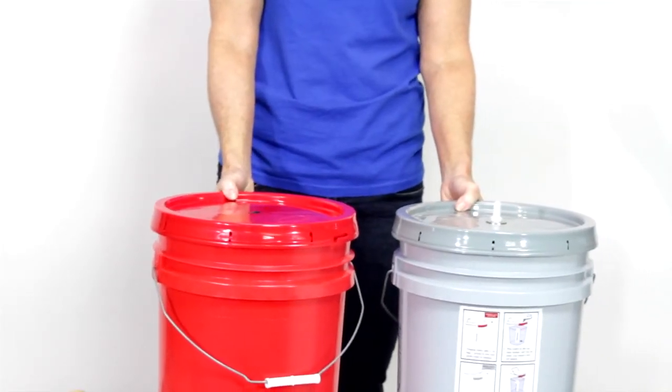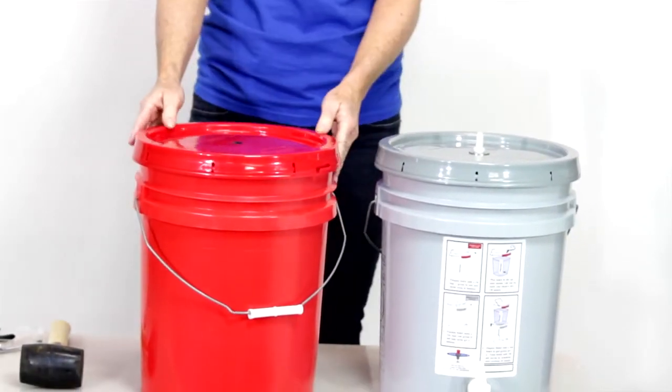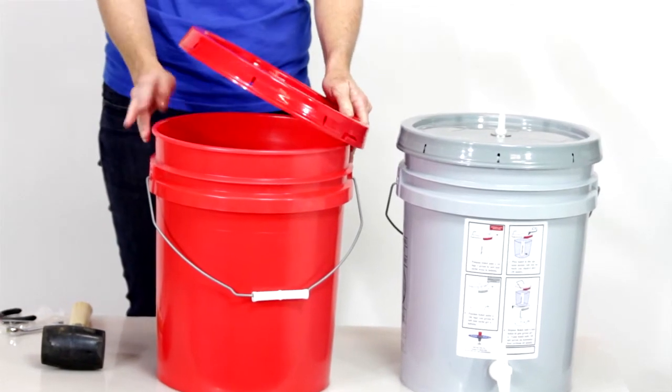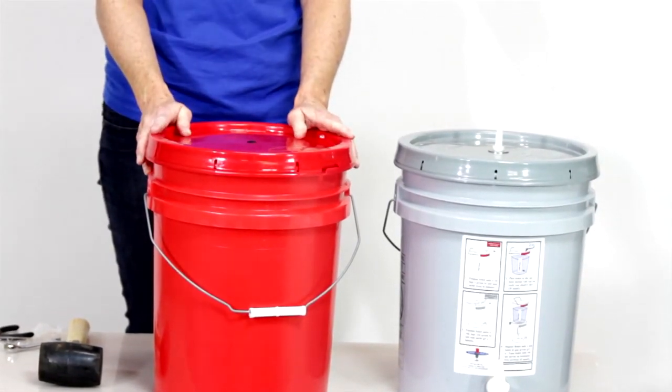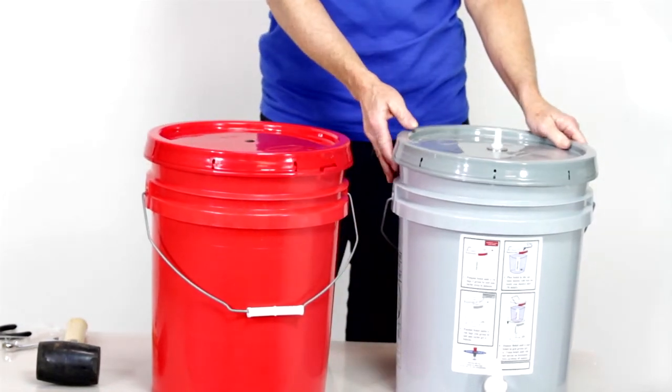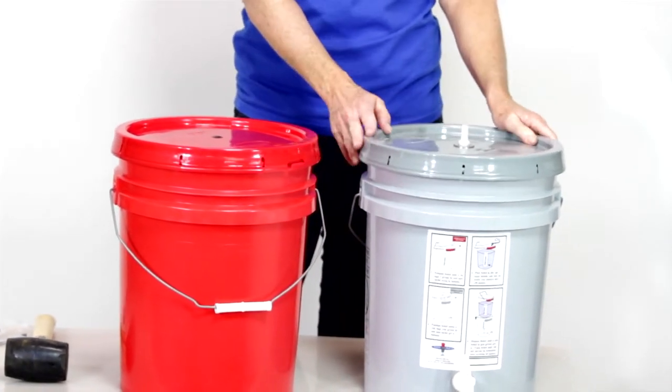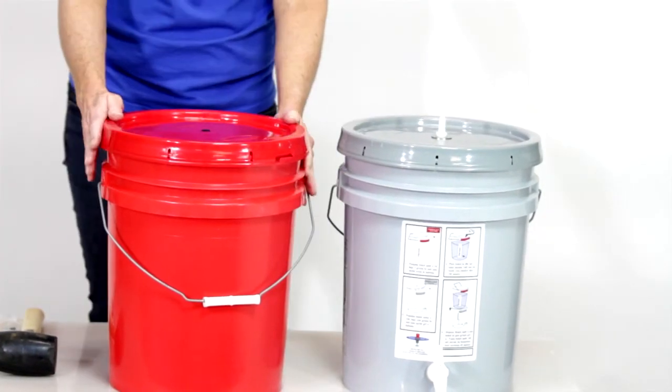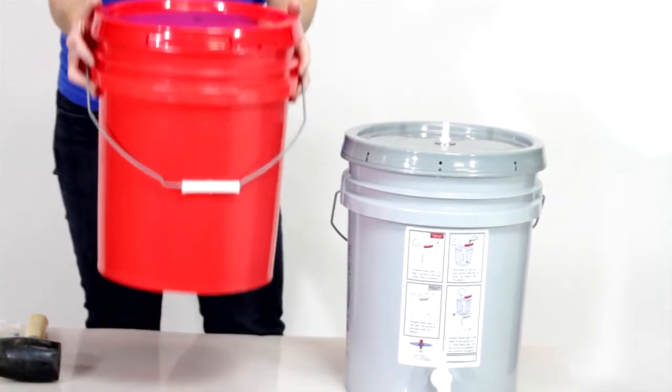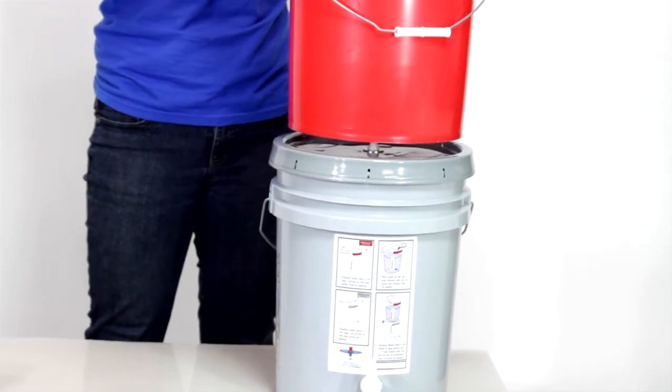That's the assembly of the unit. When the families use it, they will put a chlorine tablet in the red bucket with dirty water and let it sit for 30 minutes. They'll put a smaller 17 milligram chlorine tablet in this gray bucket. This is the safe storage container. After 30 minutes, they put this bucket with the dirty water on top of the gray bucket.